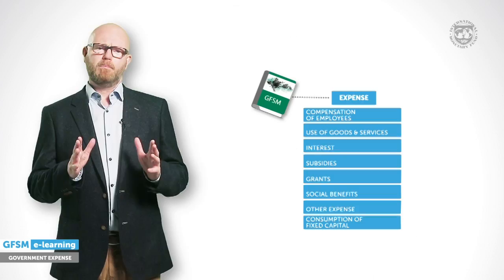Consumption of fixed capital covers the statistical measurement for the wear and tear of assets — such as roads, railways, vehicles, and buildings — that causes the value of assets to decrease over time. This concept is related but not identical to depreciation in accounting. It is an expense item; however, it constitutes an exceptional category as it does not involve interaction with other units. Government transacts with itself by acting both as user and owner of an asset.